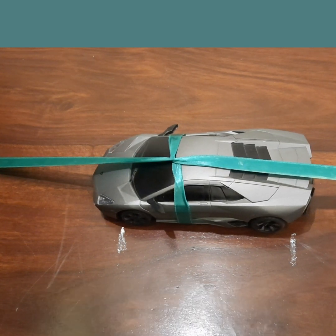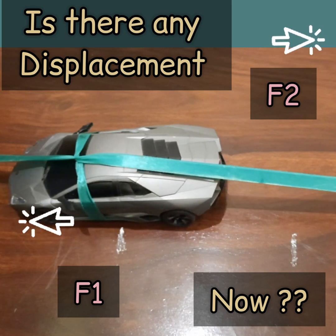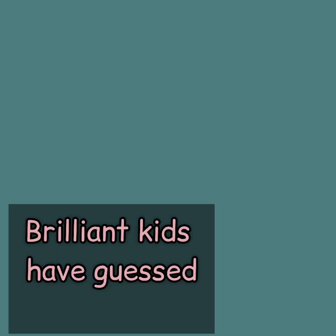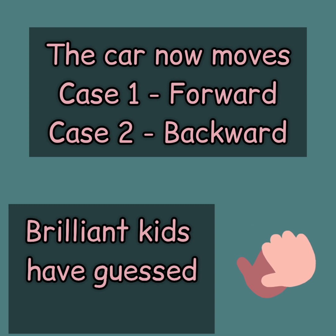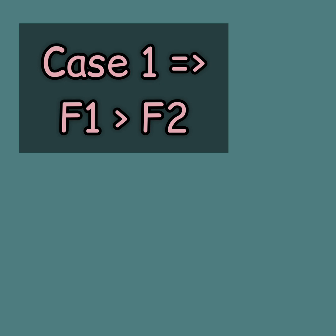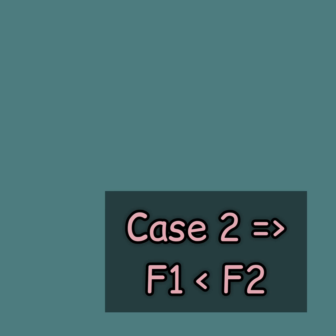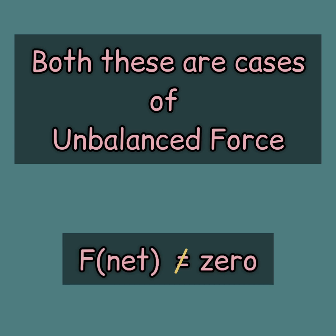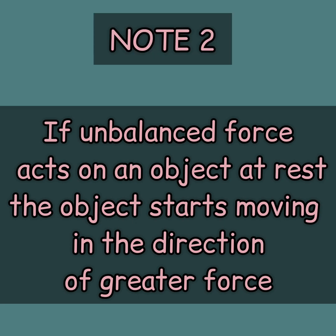Now let's try again. I am pulling the car from both sides. Is there any displacement? The two forces are still acting on the car — but what is happening? In the first case, the car moves forward but later starts moving backward. We can conclude that the forces are not equal. In case 1, F1 was greater than F2, while later F2 was greater than F1. Both these cases are of unbalanced force where F net is not equal to zero.